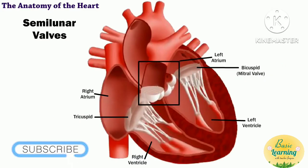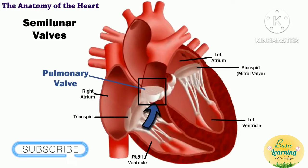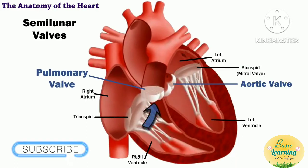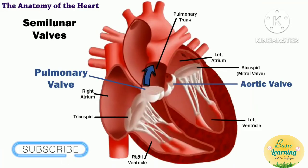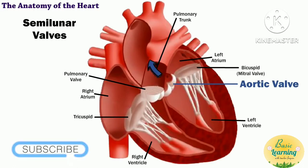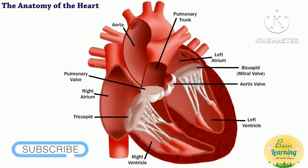There are also two semilunar valves: the pulmonary valve and the aortic valve. The pulmonary valve is between the right ventricle and the pulmonary trunk, and the aortic valve is between the pulmonary trunk and the aorta.